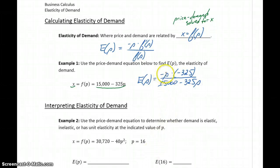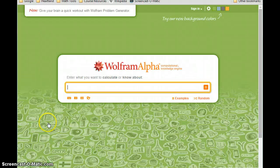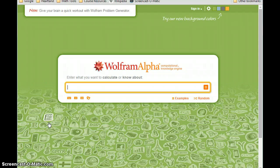Again, what we have is negative P times the derivative of that price-demand function over the original price-demand function. And while I didn't use Wolfram Alpha to calculate that derivative, we can turn to Wolfram Alpha to reduce that expression for us.